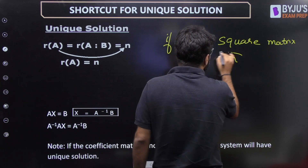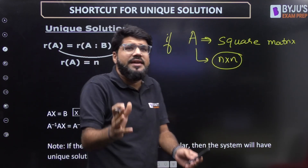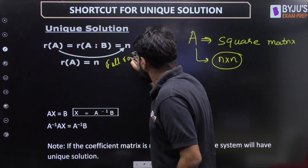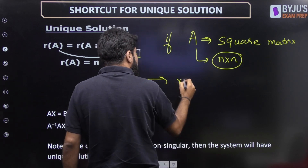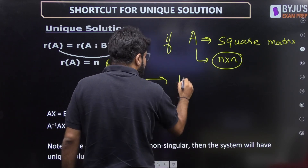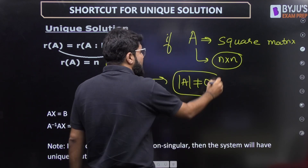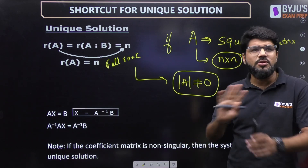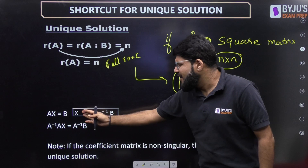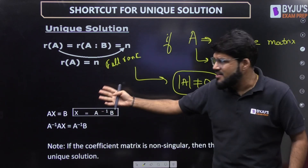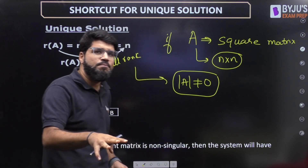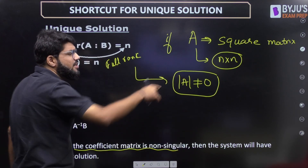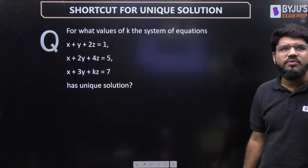For a square n×n matrix, the condition for rank equal to n is called the full rank condition. A matrix has full rank when its determinant is non-zero. So the only step you need to apply for the unique solution is: whenever determinant of A ≠ 0, the system has a unique solution. The coefficient matrix should be non-singular, i.e., det(A) ≠ 0.